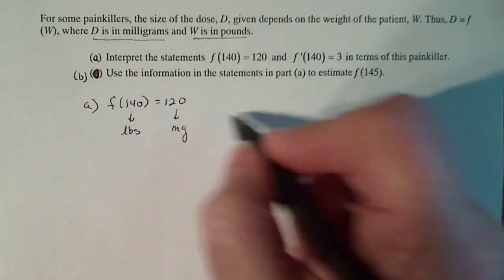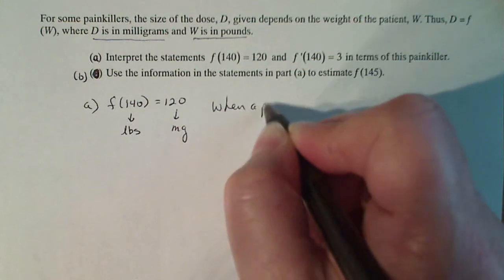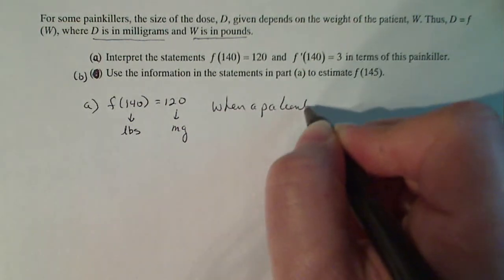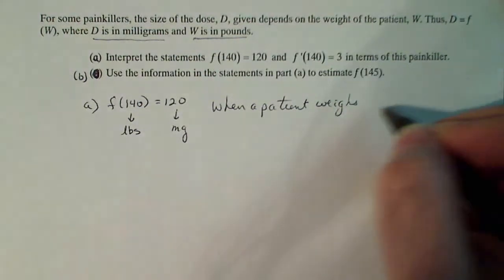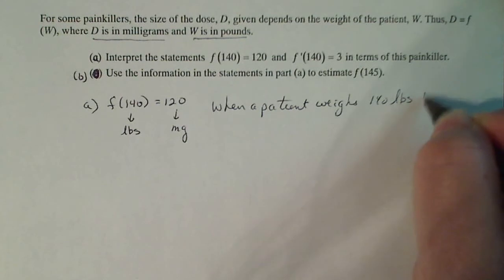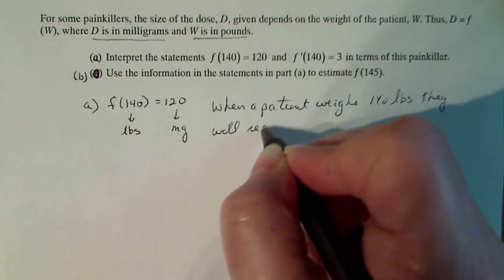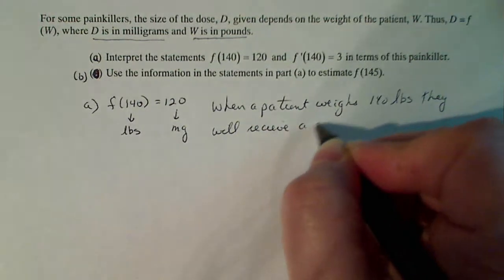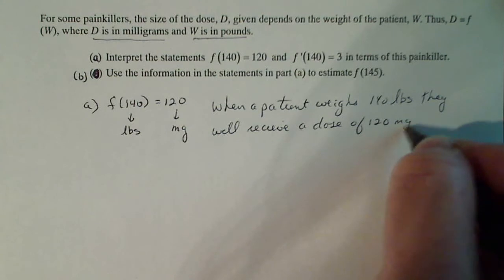So if I'm going to describe this, I would say when a patient weighs 140 pounds, they will receive a dose of 120 milligrams of painkillers.